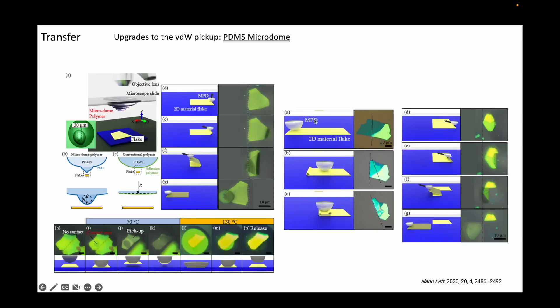Finally, this work takes it one step further by making a third dome, which is only 30 microns wide in diameter. They cover this micro dome with PVC, which is used as the adhesive polymer here, to manipulate 2D flakes.